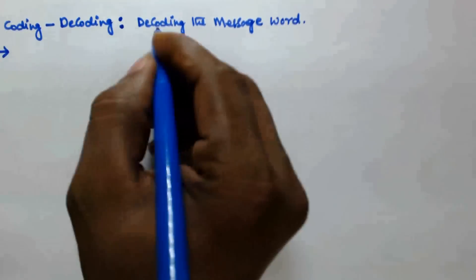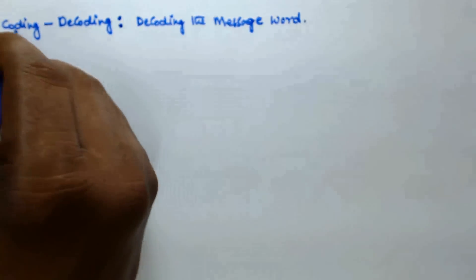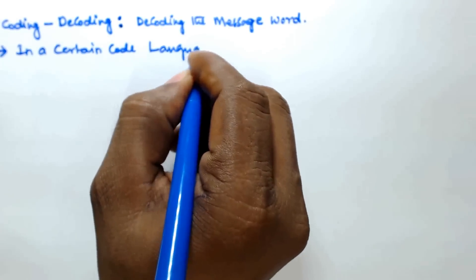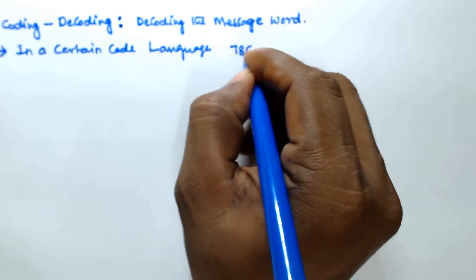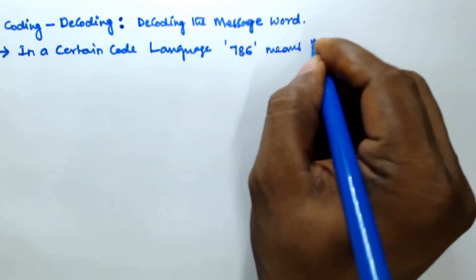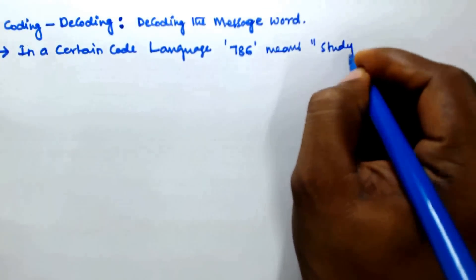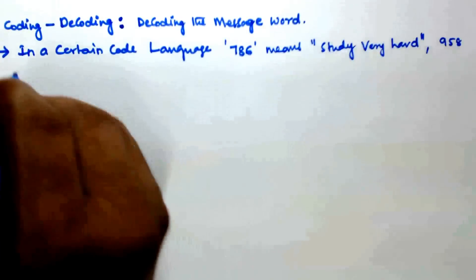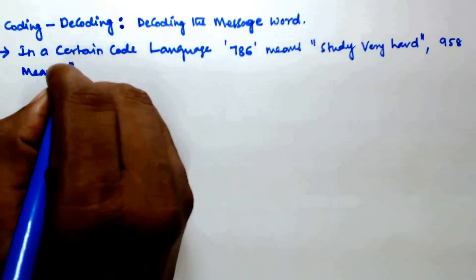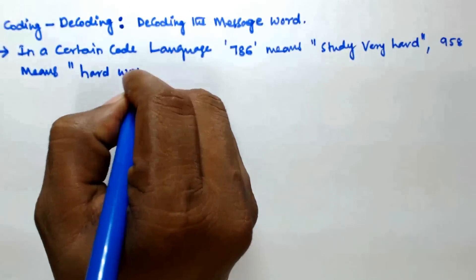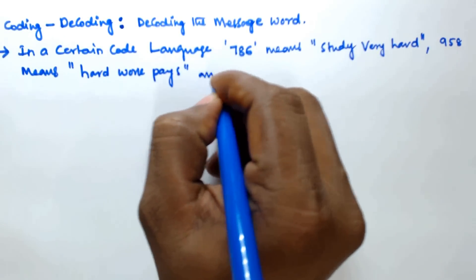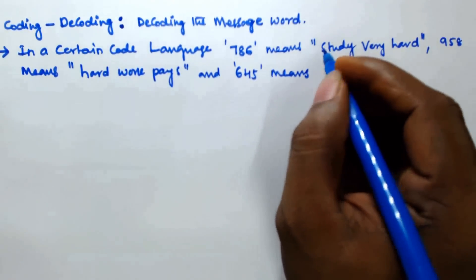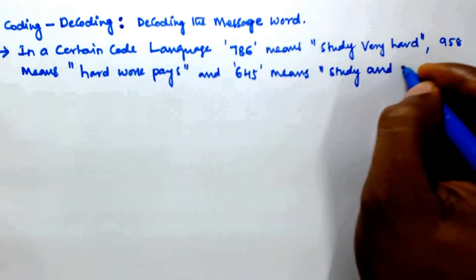Let us take one example to see this decoding the message word problem. In a certain code language: seven eight six means 'study very hard'; nine five eight means 'hard work pace'; and six four five means 'study and work'.